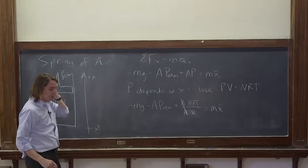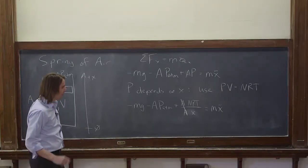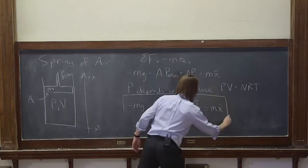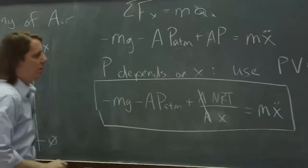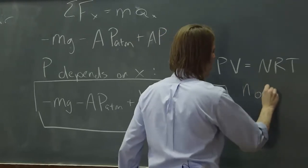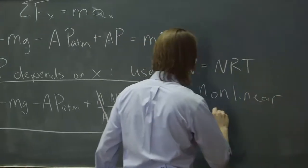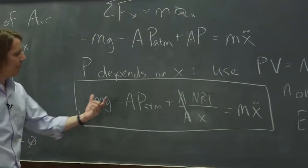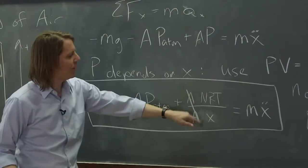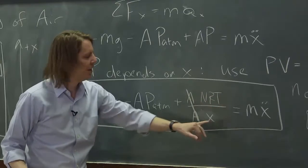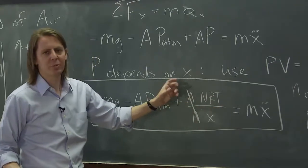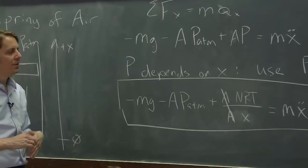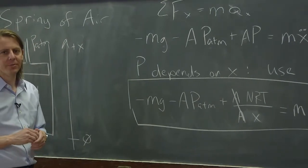Now we have our nonlinear equation of motion. We have a constant minus another constant plus something over x, one over x, equals m x double dot. In this case, x is to the minus one power. That's why the equation of motion is nonlinear and one that we're going to have to linearize if we're going to solve it.